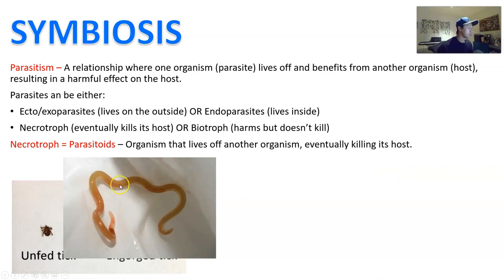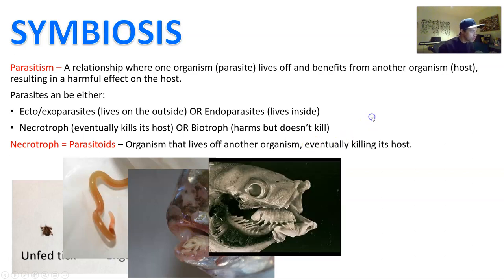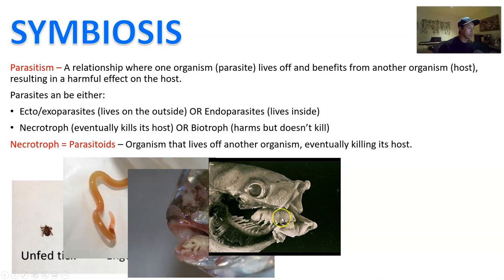An endoparasite example: worms can be parasitic — things like roundworms that live inside the body. Here is a tongue-eating louse, which eats the tongue of fish. The fish has no idea because there are no real nerves on the tongue. The louse lodges itself into the fish's body, actually becomes the fish's tongue, and then literally gets a free meal every time the fish eats something — and it just lives there for the rest of its life.